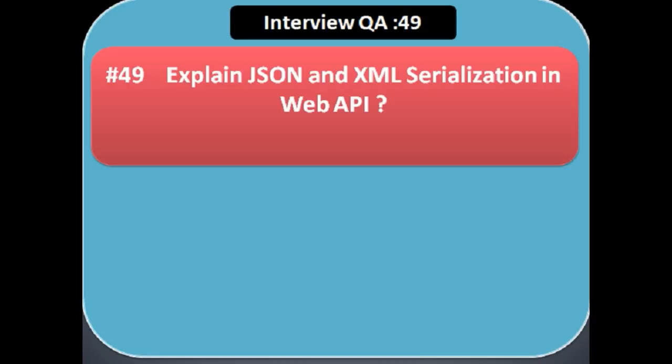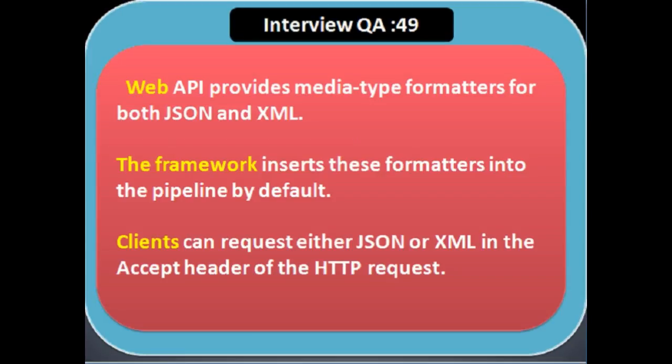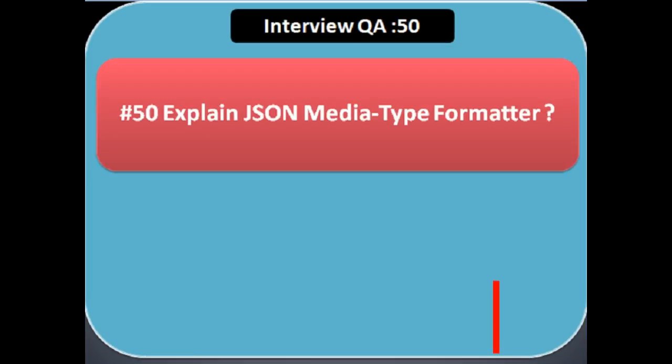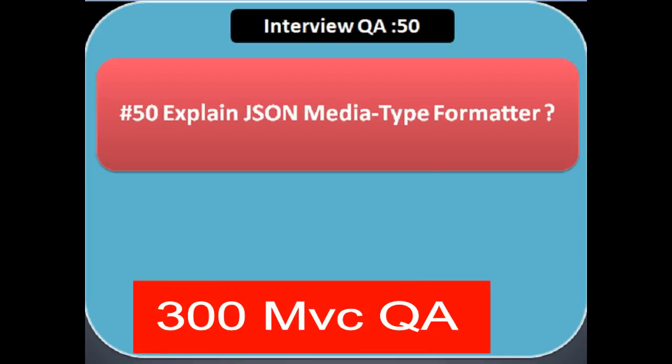Next question: explain JSON and XML serialization in Web API. Web API provides media type formatters for both JSON and XML. The framework inserts these formatters into the pipeline by default, and the client can request either JSON or XML in the Accept header of the HTTP request.